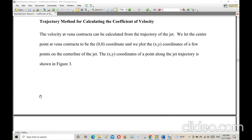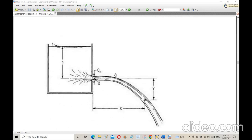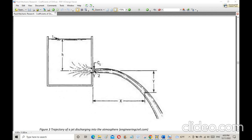The velocity at vena contracta can be calculated from the trajectory of the jet. We let the center point at vena contracta be the origin of the coordinate system, and we plot the x and y coordinates of a few points on the centerline of the jet.